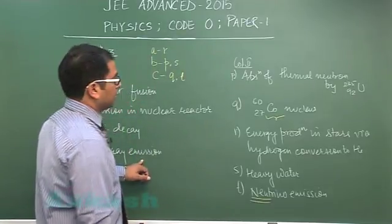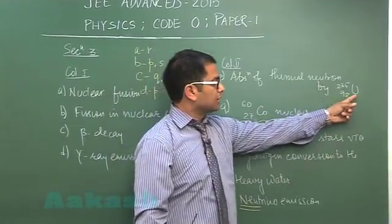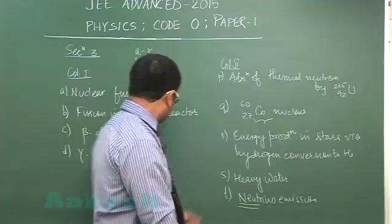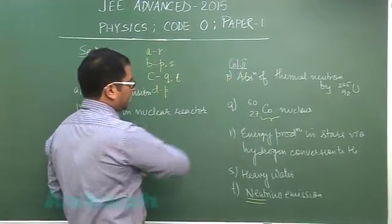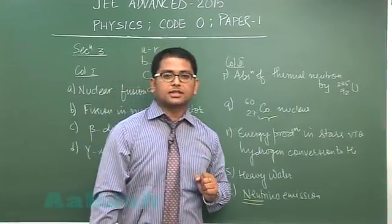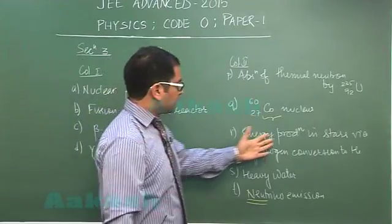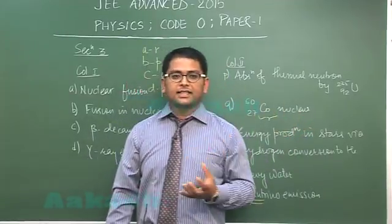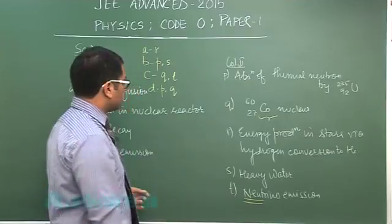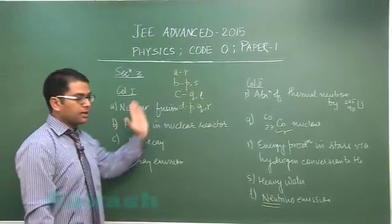For option D, gamma ray emission is valid because when uranium absorbs a thermal neutron, it converts to uranium-236, then finally to krypton and barium. In this stage, one or more gamma rays would be emitted, so that goes with option P. For Q, when cobalt gets converted to nickel, that process also involves emission of two gamma rays. In energy production in stars, when reactions take place and daughter nuclei get excited, gamma rays are emitted when returning to ground state. This would also have option R.